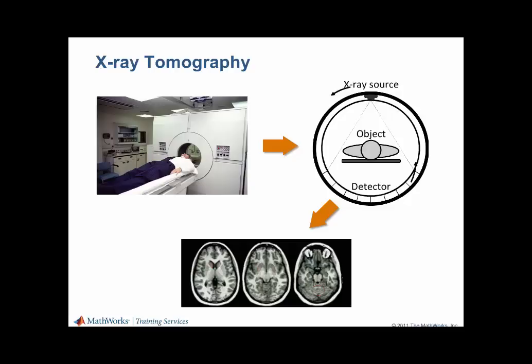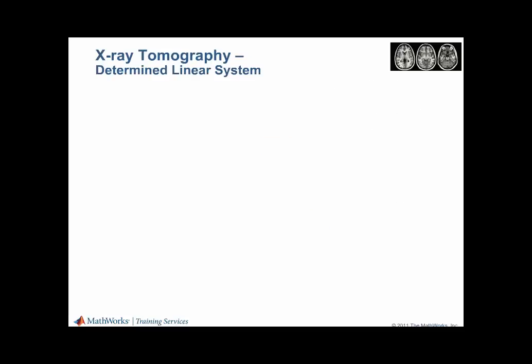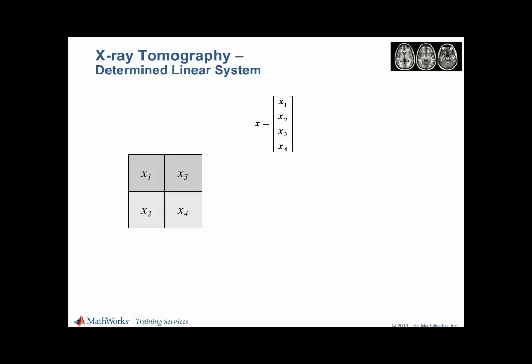Let's take a look at a single cross-section and see how we can model this as a system of equations in MATLAB. We start by dividing up the cross-section of the body being imaged into discrete blocks. Each of these blocks represents densities that attenuate the X-rays. In this case, we are using a simplified model with only four blocks, and they are represented as the column vector X.